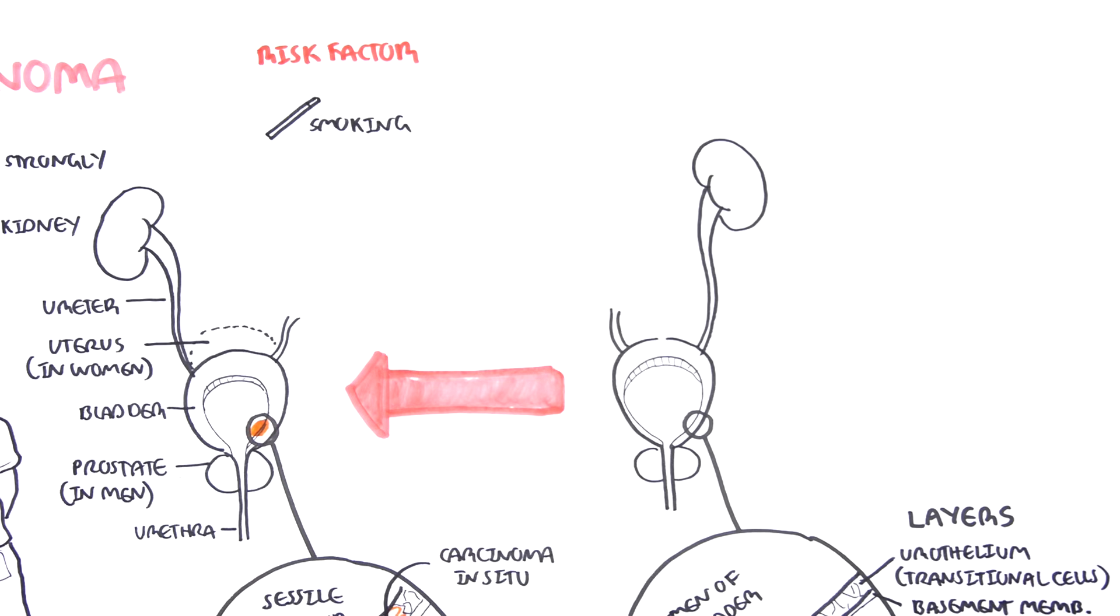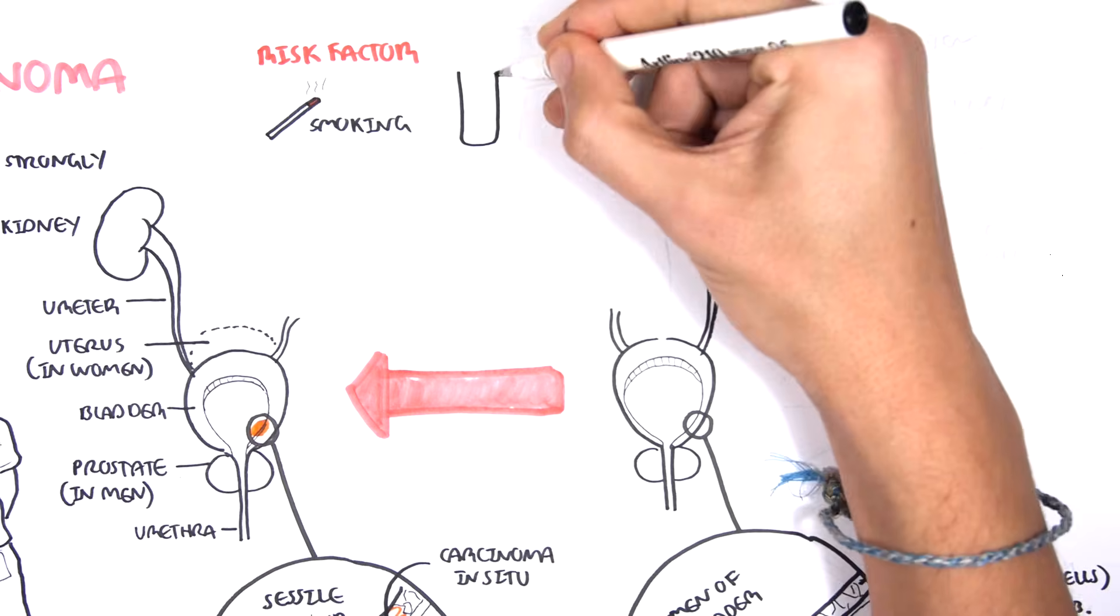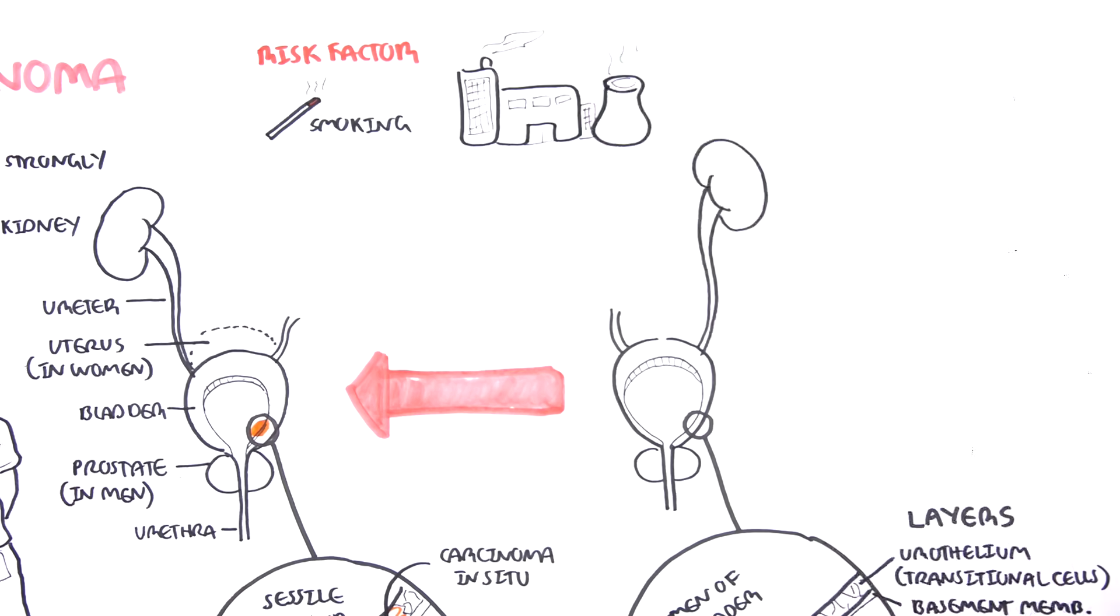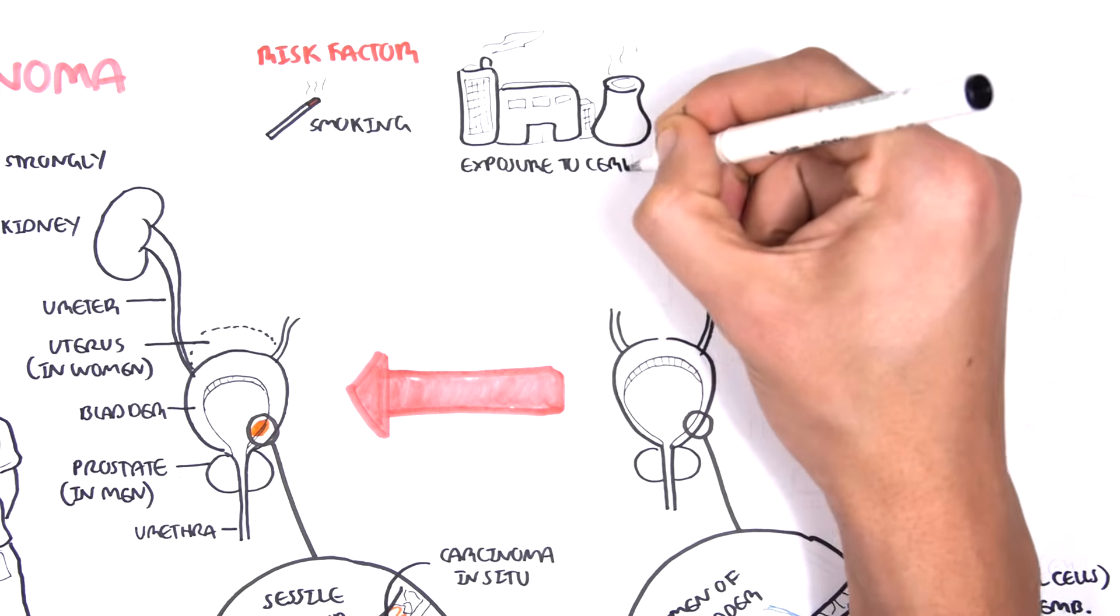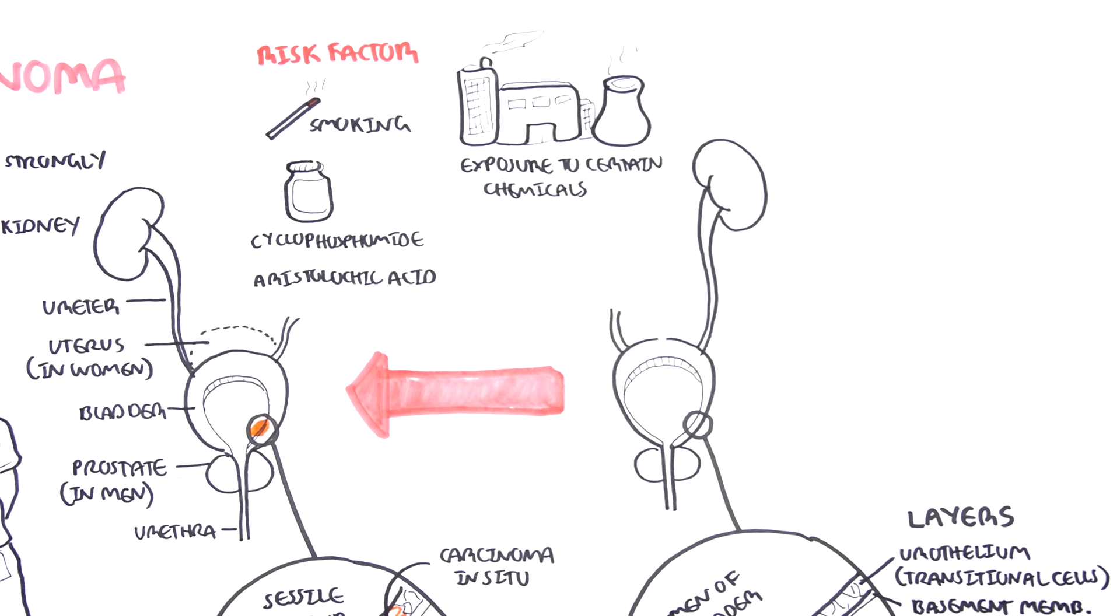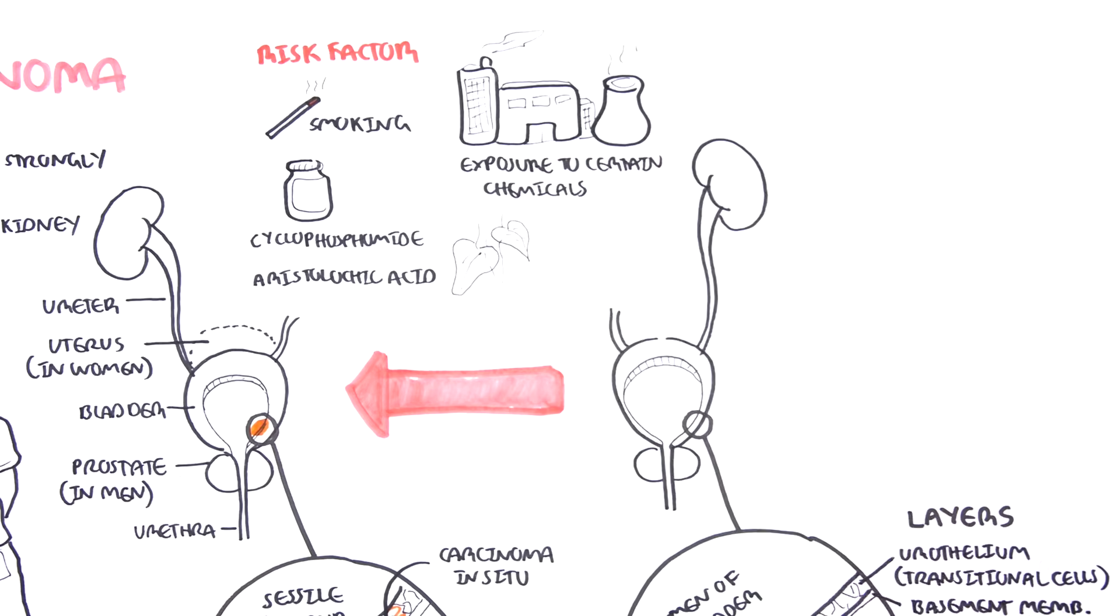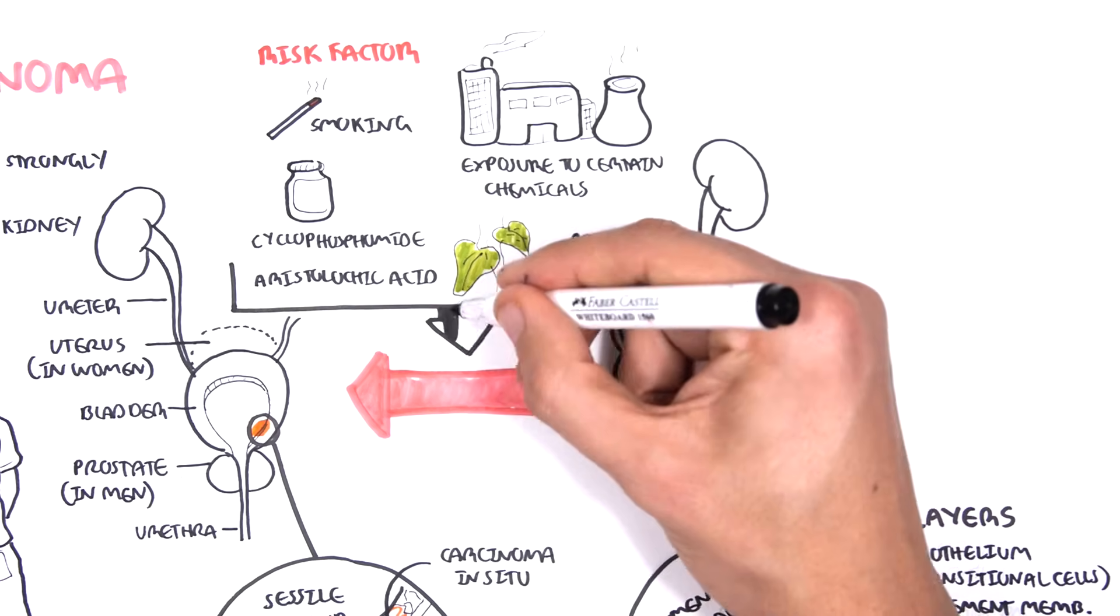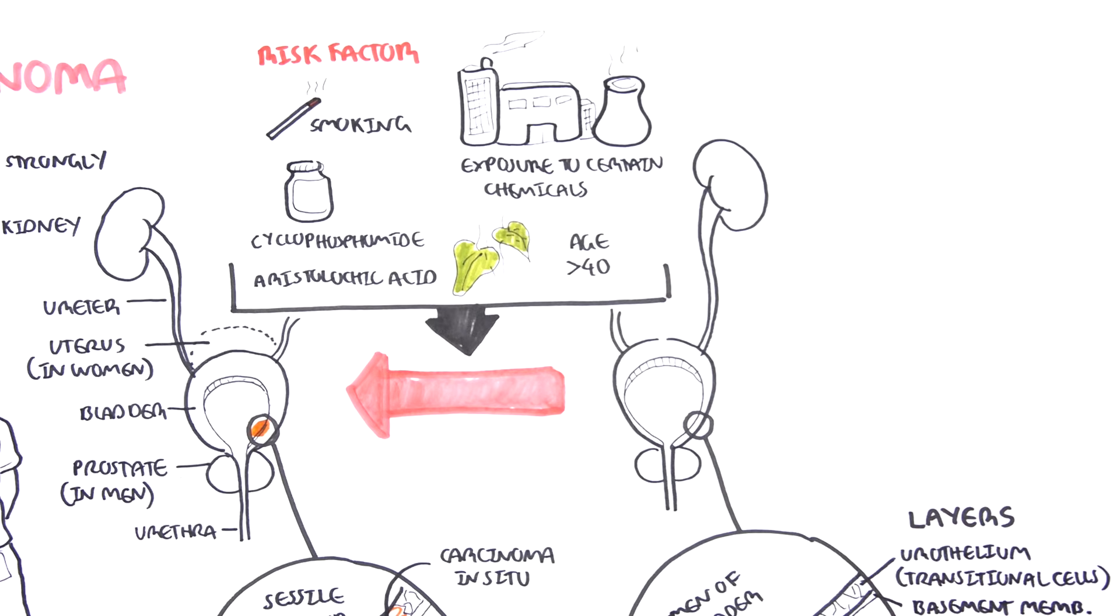The risk factors for developing bladder cancer, especially urothelioma, is smoking, exposure to certain chemicals which won't be discussed, cyclophosphamide (a medication), aristolochic acid, age greater than 40, and there are some other minor risk factors which are not mentioned.